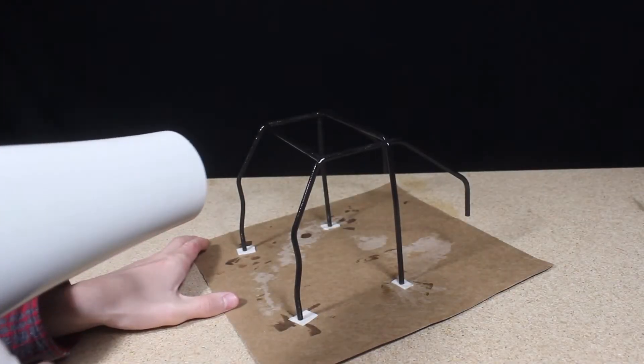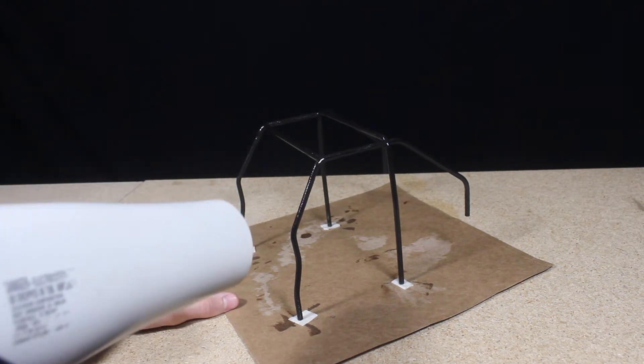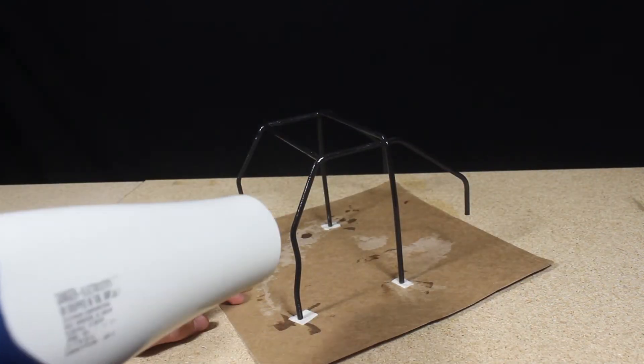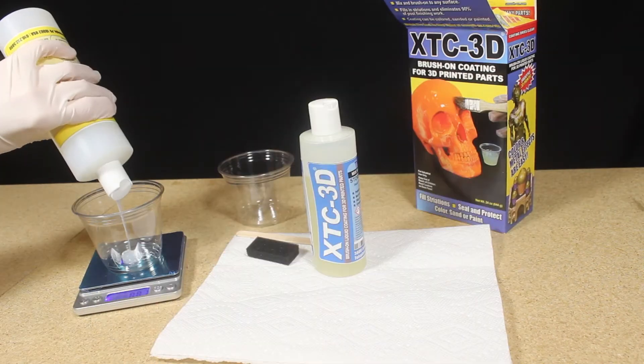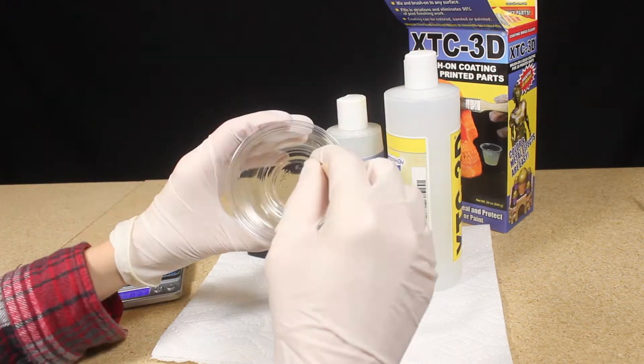The coating fully cures at room temperature in about two hours, however cure time can be reduced by using heat. I repeated the process of mixing and applying to add a second coat to the part.